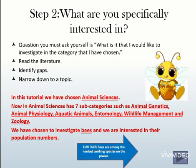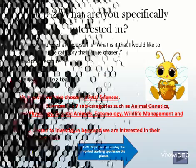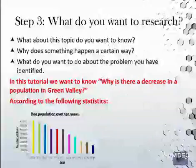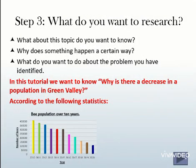Step three is where you decide what you want to research. Ask yourself why something happens a certain way, and what do you want to do about the problem that you have identified? In this example, we notice that there is a downward trend in the number of bees each year. Based on this observation, we want to know why there is a decrease in the population of bees in Green Valley.